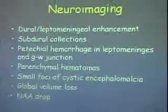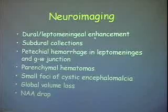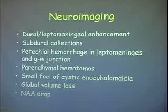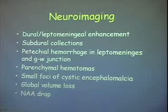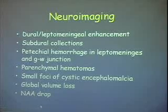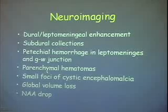Overall, looking through the literature, we see reports of dural and leptomeningeal enhancement — etiology unclear, possibly slow flow in partially occluded vessels — along with subdural collections, petechial hemorrhages in the leptomeninges and gray-white junction, parenchymal hematomas, small foci of cystic encephalomalacia, global volume loss, and NAA drop. When people talk about 'stroke' in these reports, it's not always clear what they mean — it could refer to parenchymal hematomas, areas of cystic encephalomalacia, or areas of edema. We really need the actual images from those cases to determine the frequency of different patterns.